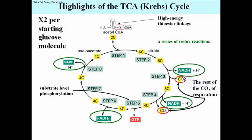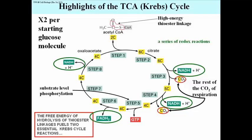There's the thioester linkage on acetyl coenzyme A. The free energy of hydrolysis of thioesters figures twice in the mitochondrion in the oxidation of acetyl coenzyme A. Once at the beginning of the cycle, where acetyl coenzyme A condenses with oxaloacetate — a 2-carbon and a 4-carbon compound coming together to make 6-carbon citric acid — an energy-requiring reaction fueled by hydrolysis of the thioester linkage. And the second place is in step 5, where the energy to form the GTP in higher organisms or the ATP in bacteria also comes from the hydrolysis of a thioester linkage.